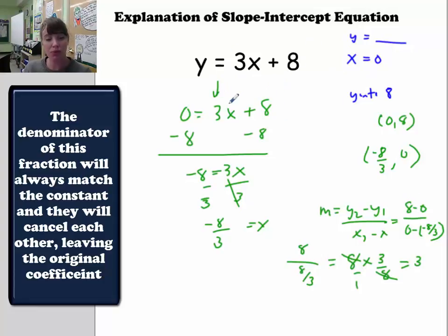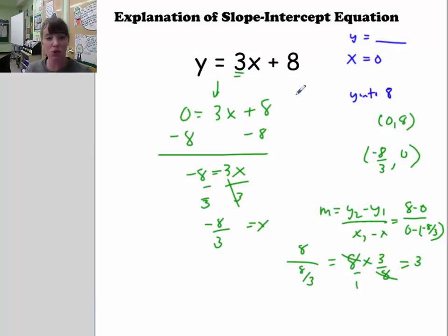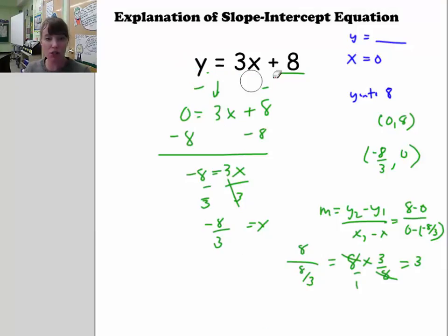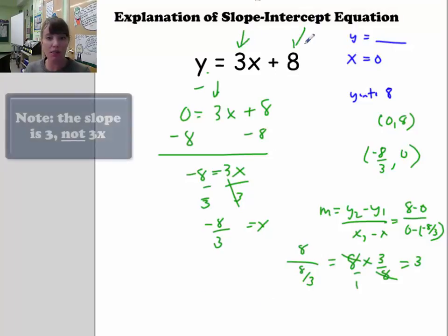The nice part about slope-intercept form is that when it's solved for y, the coefficient of x equals the slope. Remember, solved for y means the coefficient of y is 1. If the coefficient of y is something other than 1, you'd have to divide both sides of the equation by that coefficient. But if the coefficient of y is already 1, then we say it's in slope-intercept form, and the coefficient of x is the slope and the constant is the y-intercept.